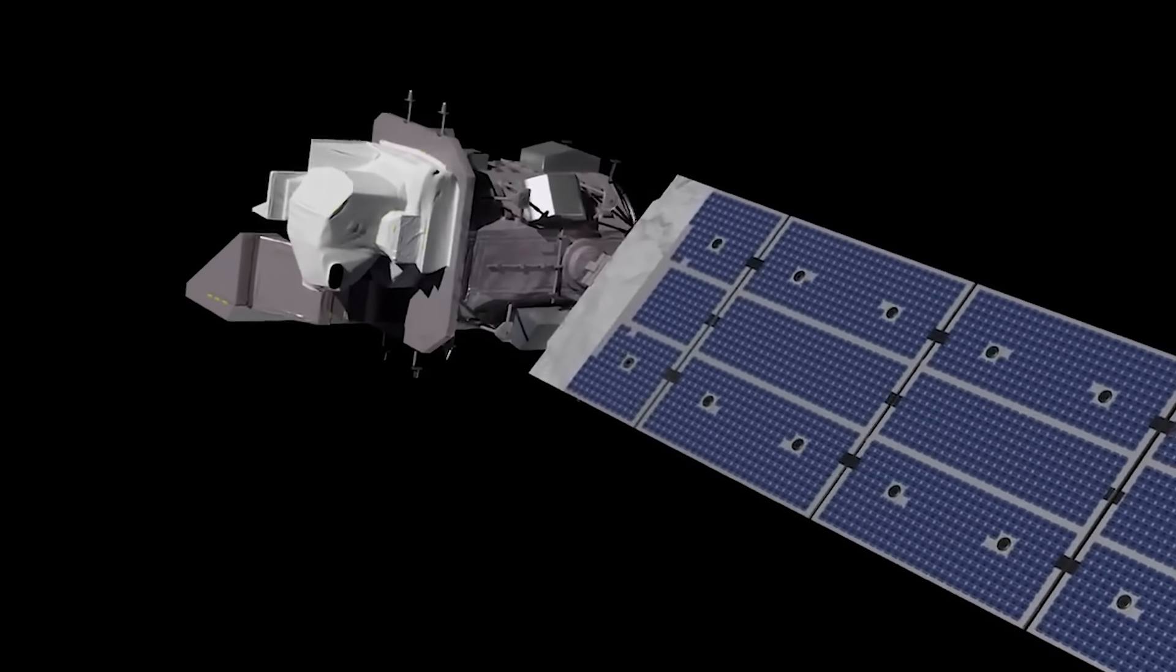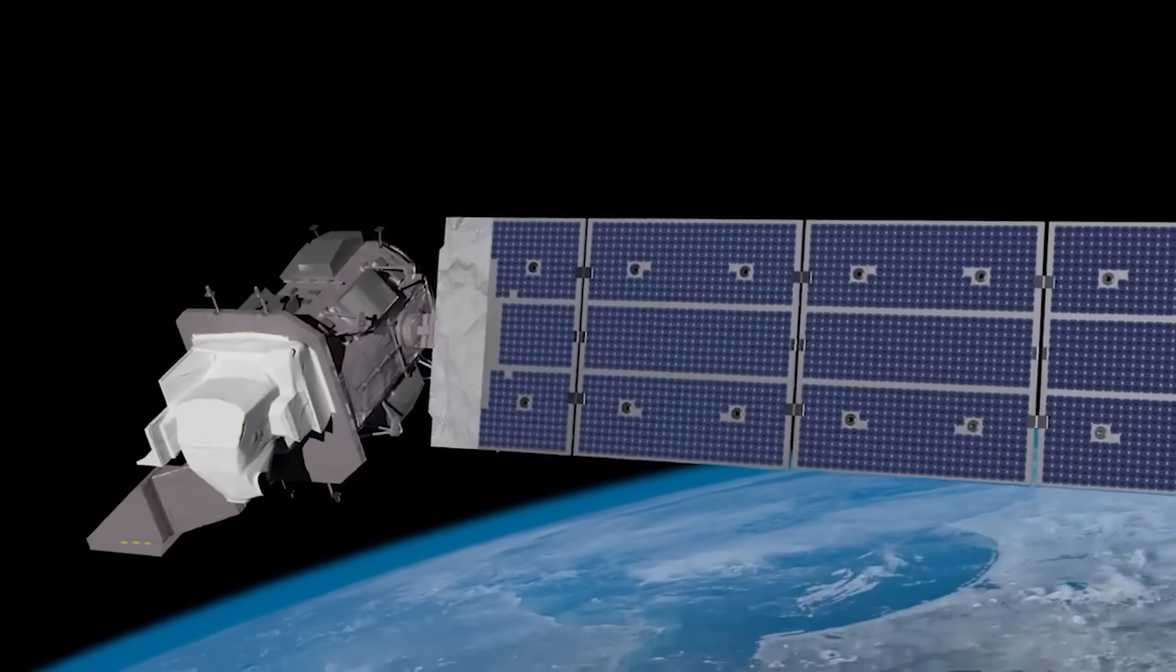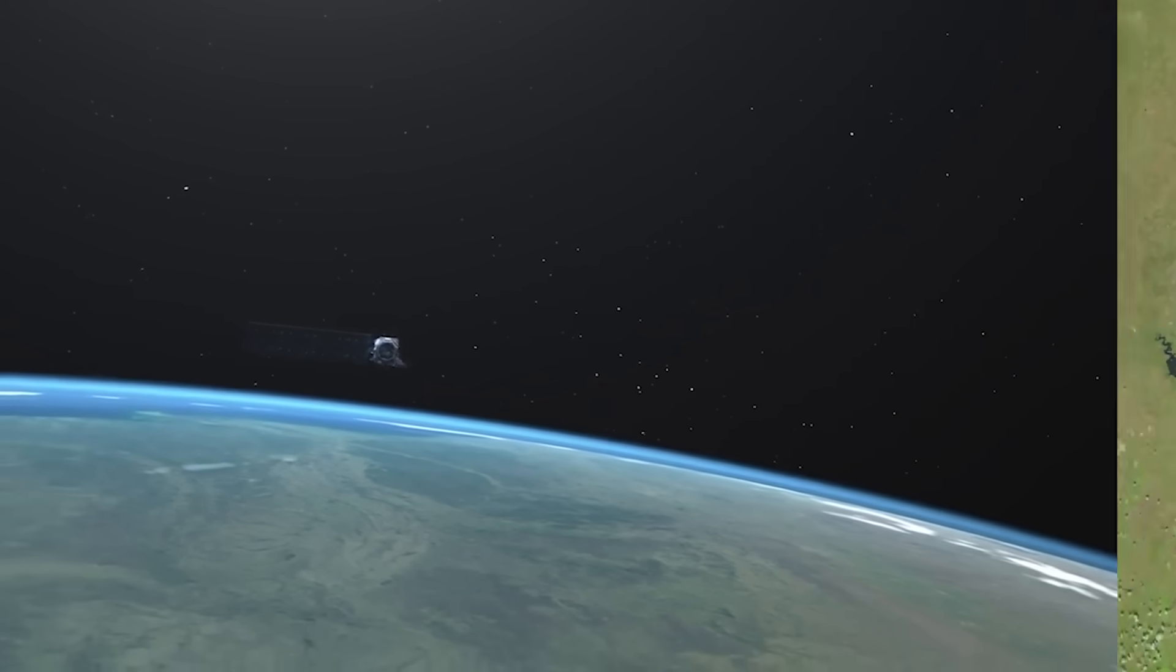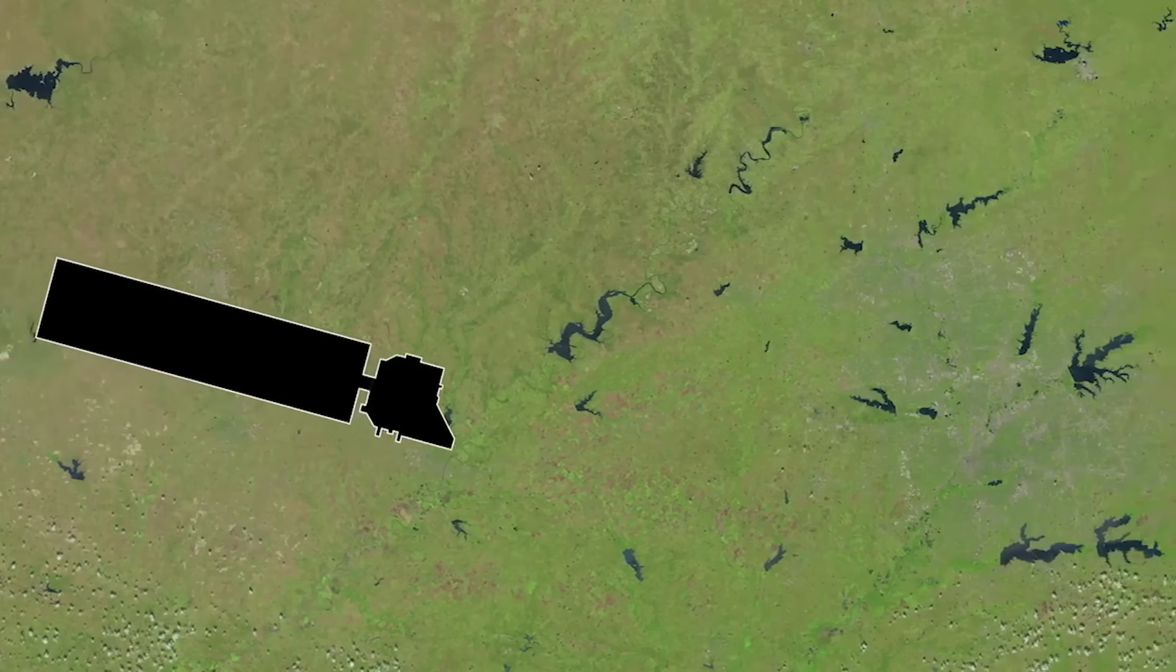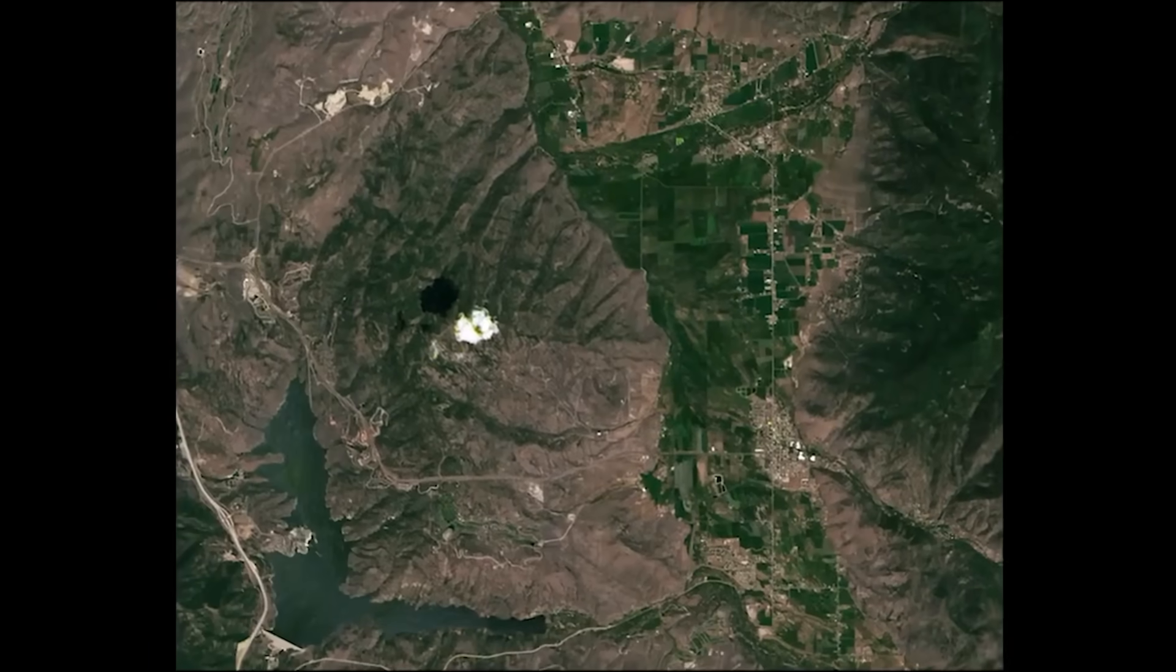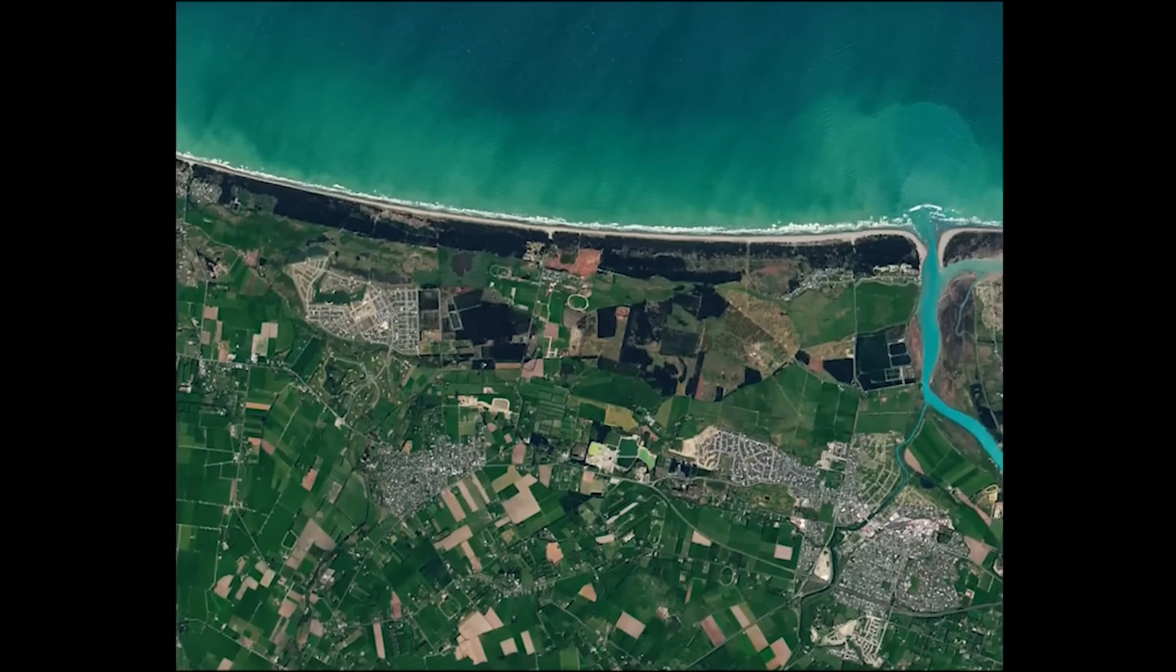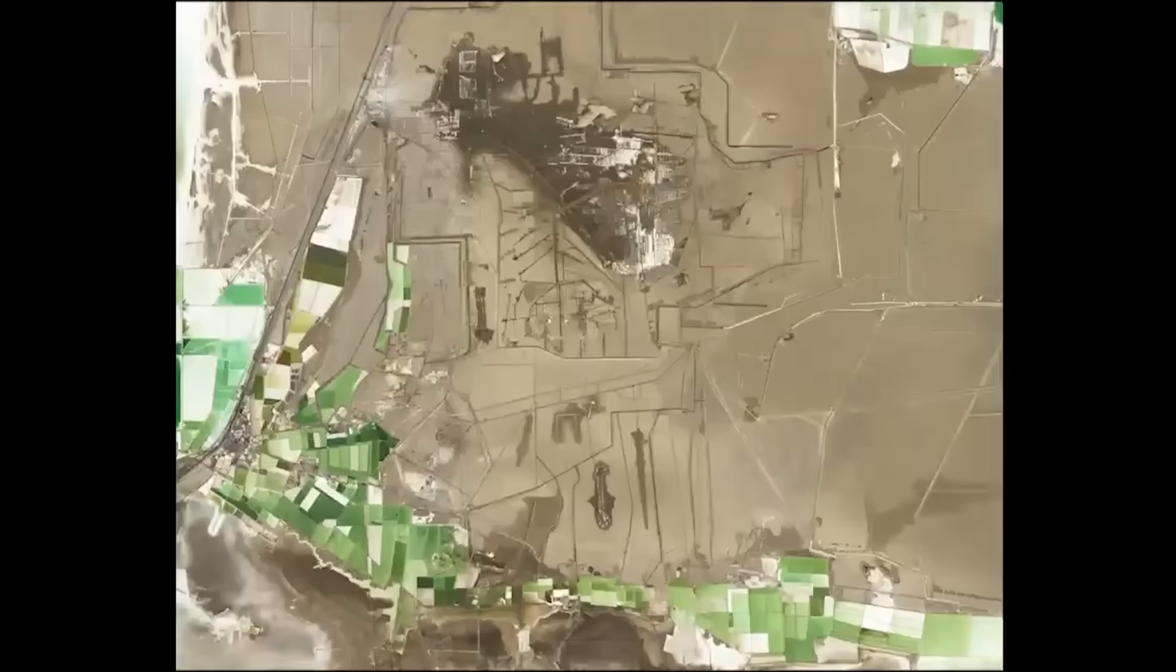Earth observation satellites play a vital role in monitoring our planet's health. They track climate change, monitor deforestation, and help predict natural disasters. This data is essential for informed decision-making and sustainable resource management. Earth observation satellites contribute to environmental science, agriculture, and disaster response, providing critical information for addressing global challenges.